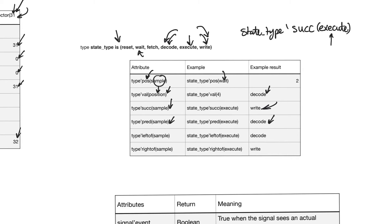Left of, right of, successor, and predecessor seem to do the same thing, and this is true when defining a type. But when defining a subtype, they differ: successor and predecessor return the successor and predecessor in the parent type, whereas left of and right of return the successor and predecessor within the current subtype.